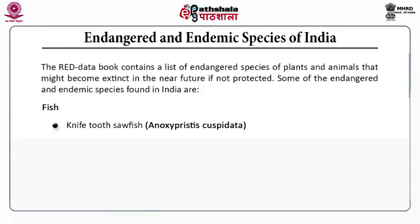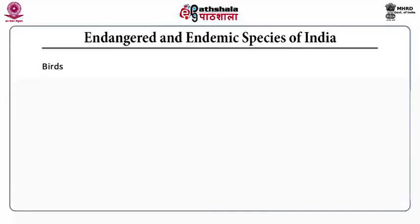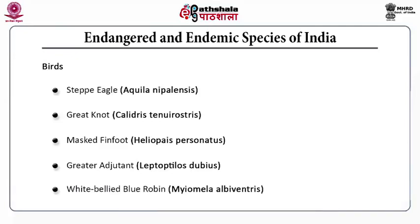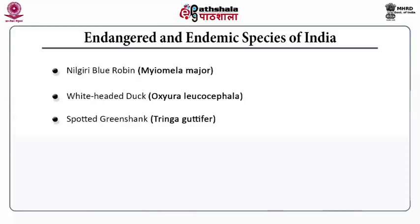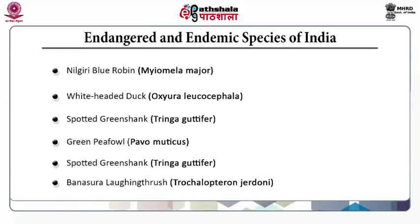Endangered fish species include knife-tooth sawfish, Asian arowana, redlined torpedo barb, and golden mahashir. Endangered bird species include steppe eagle, great knot, masked finfoot, greater adjutant, white-tailed blue robin, Nilgiri blue robin, white-headed duck, narcondum hornbill, green peafowl, spotted greenshank, bansura, and laughing thrush.